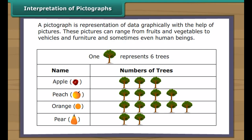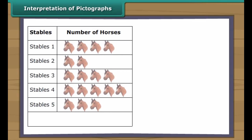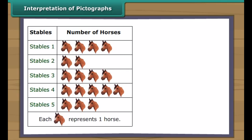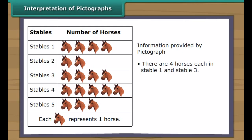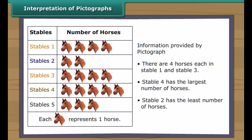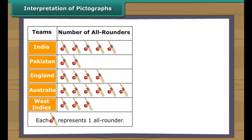Interpretation of pictographs: A pictograph is a representation of data graphically with the help of pictures. These pictures can range from fruits and vegetables to vehicles and furniture and sometimes even human beings. Look at this pictograph — it shows details of horses in five different stables in a village. Each picture of a horse represents one horse. There are four horses each in stable 1 and stable 3. Stable 4 has the largest number of horses; stable 2 has the least.